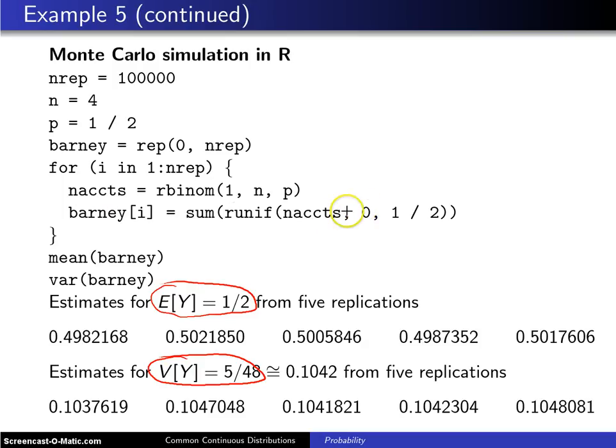What you do is you either, well, let's say for example it is three. Then what you do is you add up three random uniforms between zero and a half.